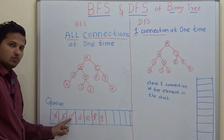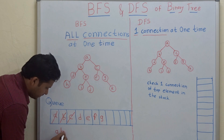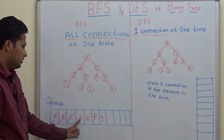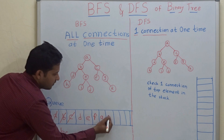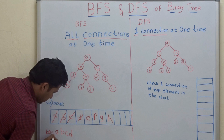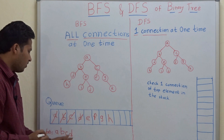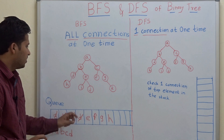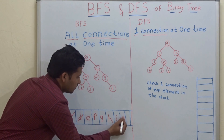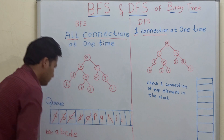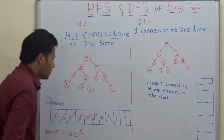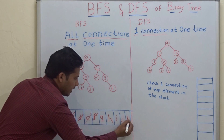Whatever you dequeue, you write it in the answer. Now it is the turn of D. What is the connection of D? That is H. Now dequeue D. Then E — its connections are I and J, so dequeue E. What are the connections of F? No connection, so dequeue F. What are the connections of G? That is K. Dequeue G.